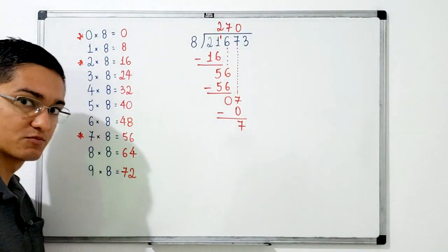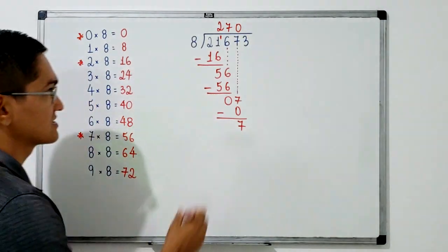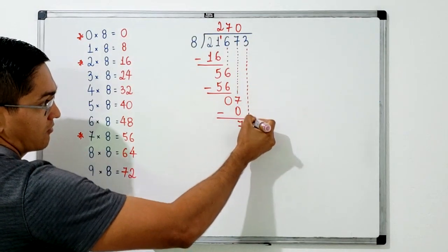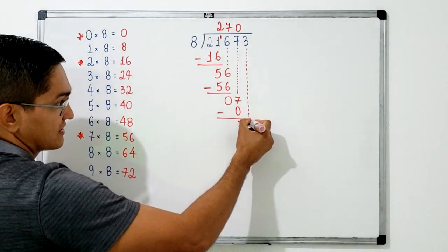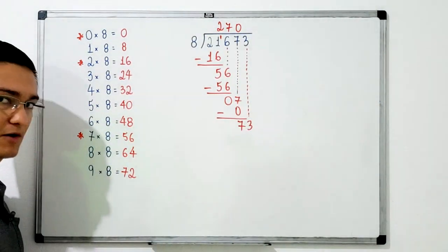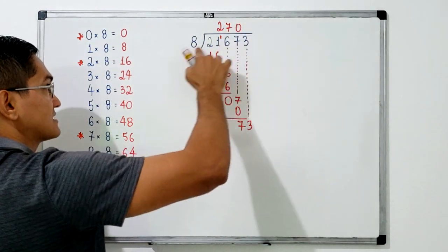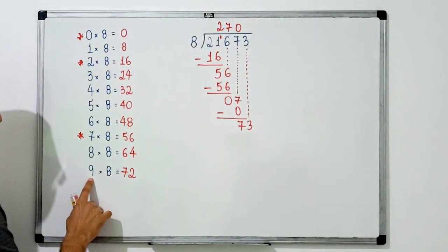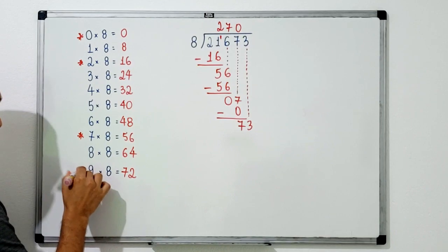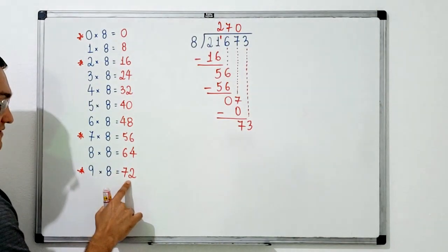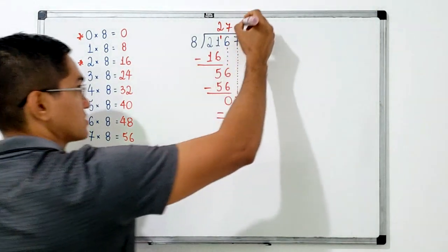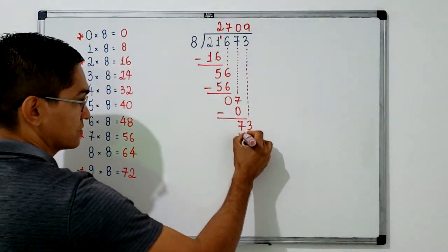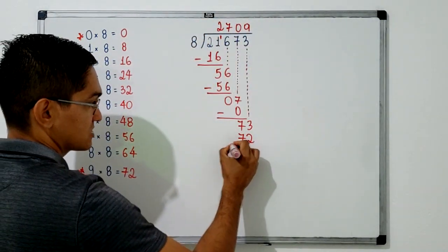After the subtraction, I bring down the next digit to get 73. How many times does 8 go into 73 without going over? The number we are looking for is 9, since 9 times 8 equals 72. I write 9 in the quotient, write 72 here, and subtract: 73 minus 72 equals 1.